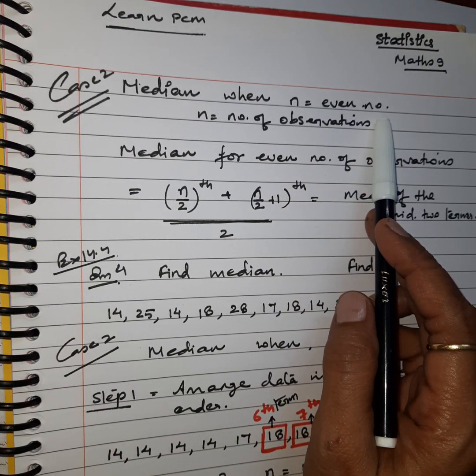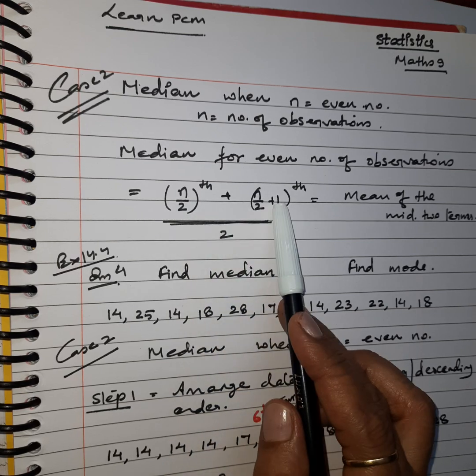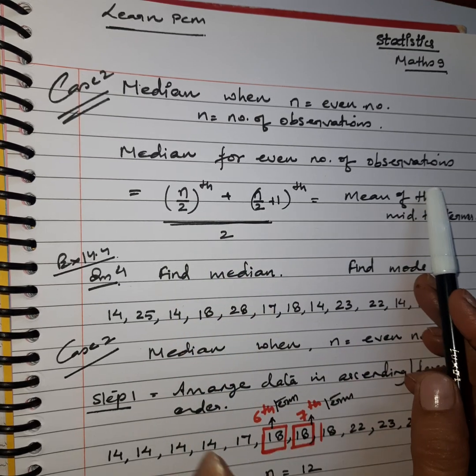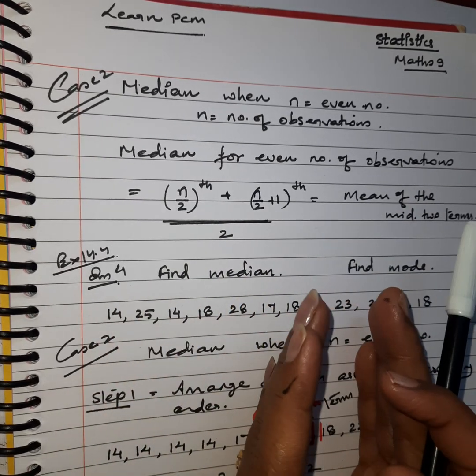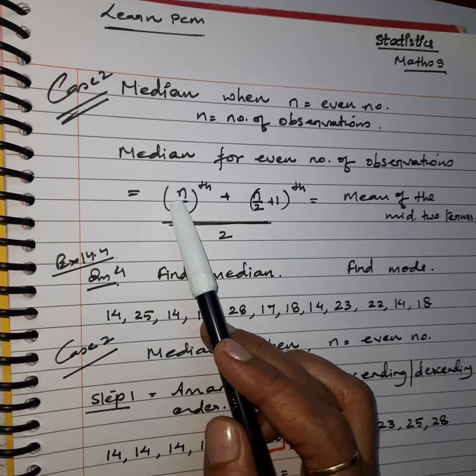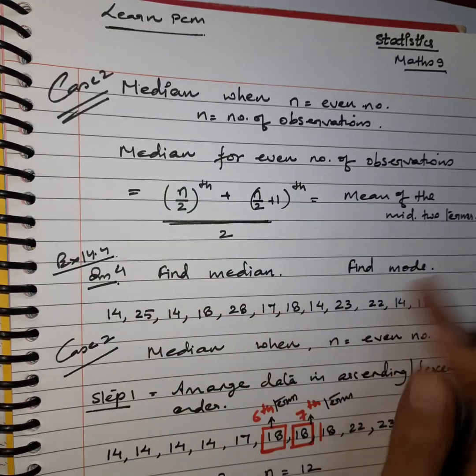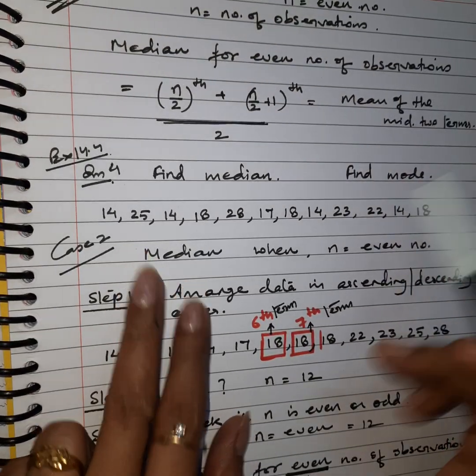To find the median of even number of observations we need two middlemost terms. Actually in case of even number of observations there are two middlemost terms and we find the mean value of those two middlemost terms to get the median. So here we are going to understand it through an example.